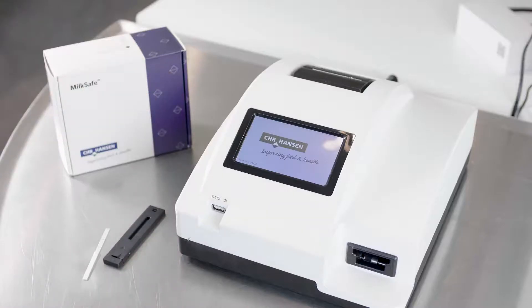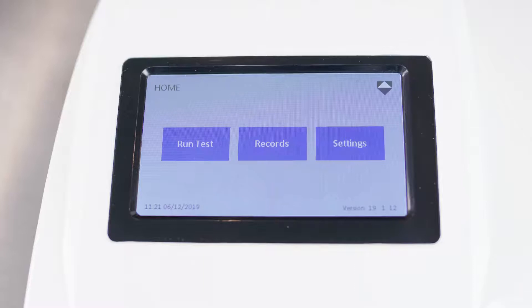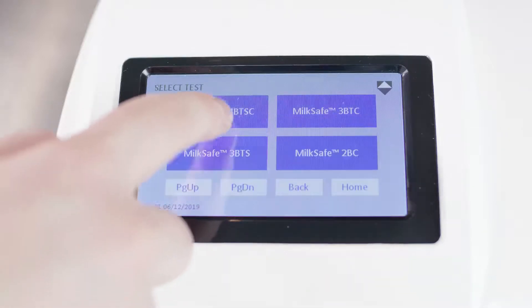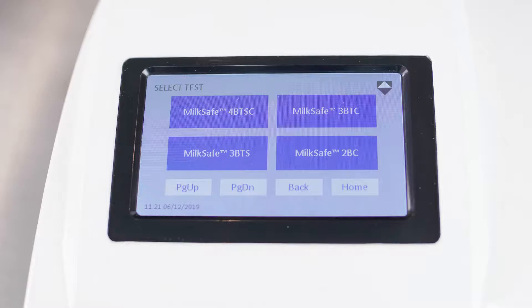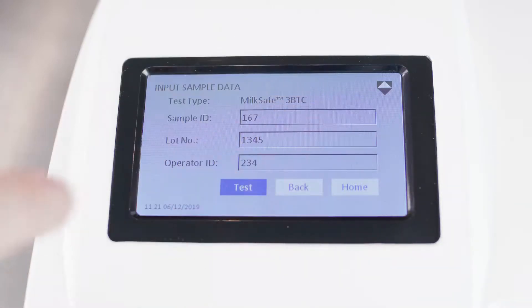Turn on the MilkSafe desktop reader. Select Test and select Qualitative for antibiotic tests. Now, select the test that corresponds to the test you are running. Enter the relevant information and press Test.